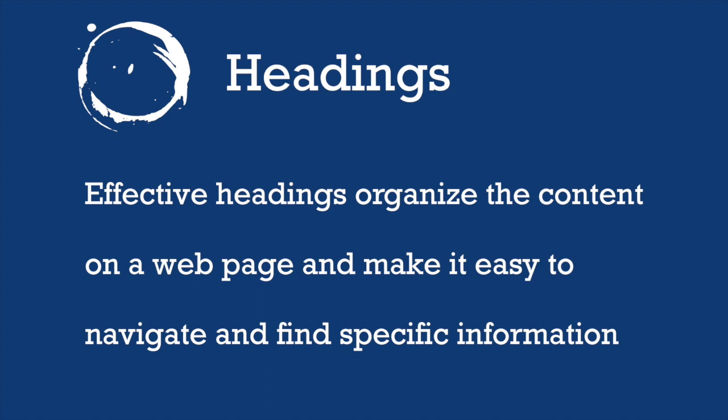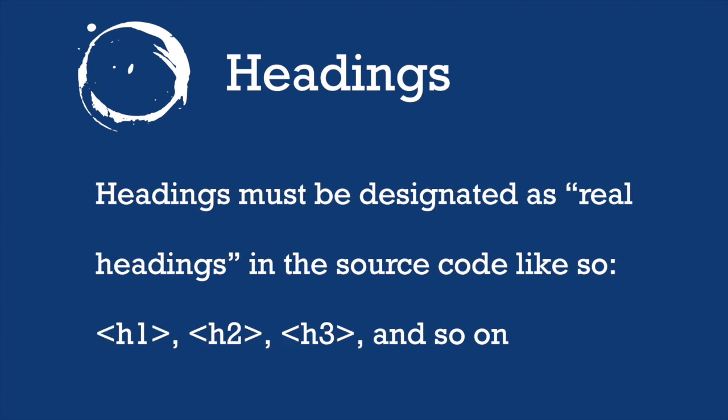The sixth element of Universal Design for the Web is headings. Effective headings organize the content on a web page and make it easy to navigate and find specific information. A person using keyboard navigation or a screen reader will benefit greatly from a well-organized web page. Headings must be designated as real headings in the source code, using tags like h1, h2, h3, and so on. Aim to use h1 headings only once as the main title of your page, then use h2 and h3 headings as subheadings.